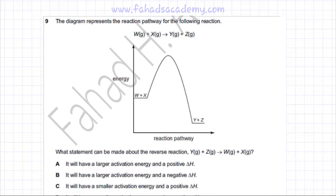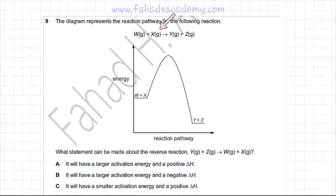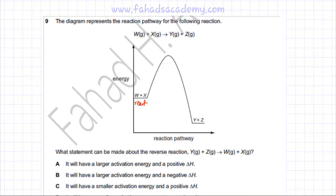This chemical energetics question is related to the energy profile diagram, or reaction pathway diagram, for the reaction where W is reacting with X and producing Y and Z. W and X are the reactants and Y and Z are the products.